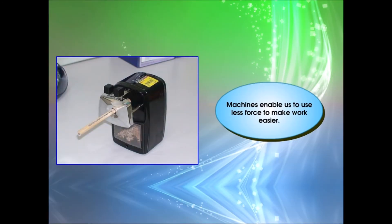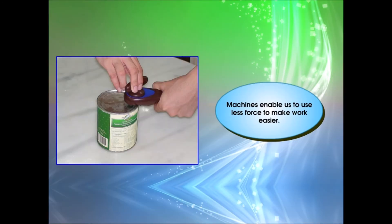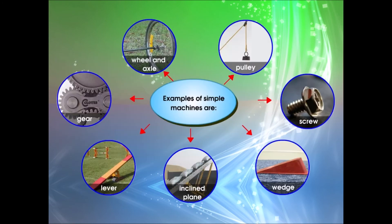Machines enable us to use less force to make work easier. Examples of simple machines are: wheel and axle, gear, lever, inclined plane, wedge, screw, and pulley.